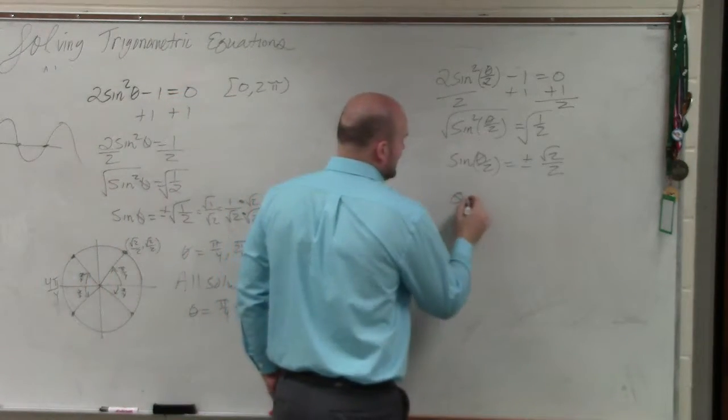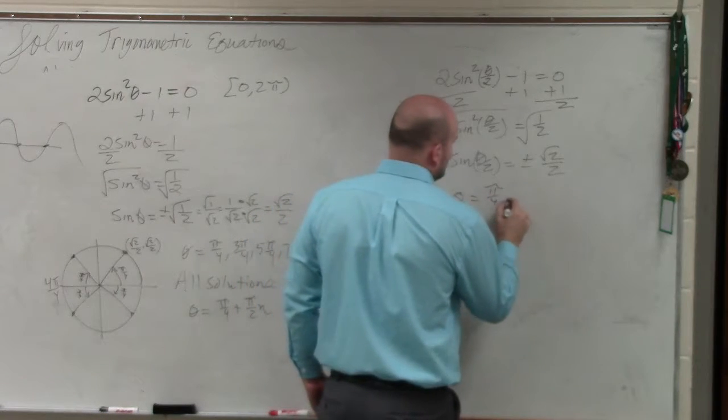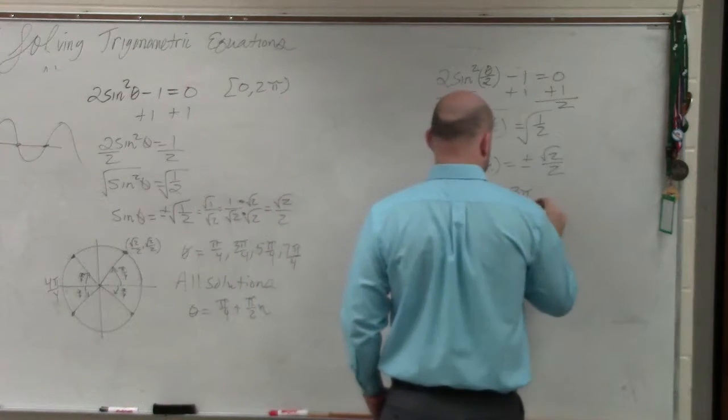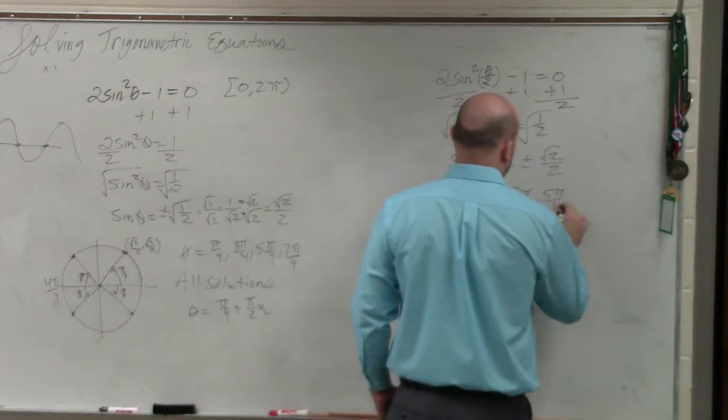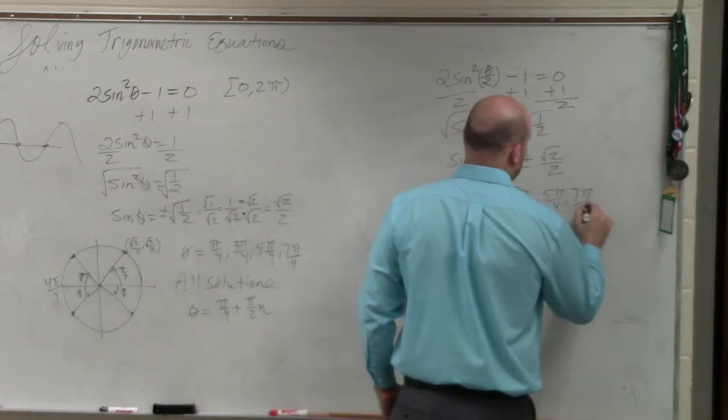So theta equals pi over 4, 3 pi over 4, 5 pi over 4, 7 pi over 4.